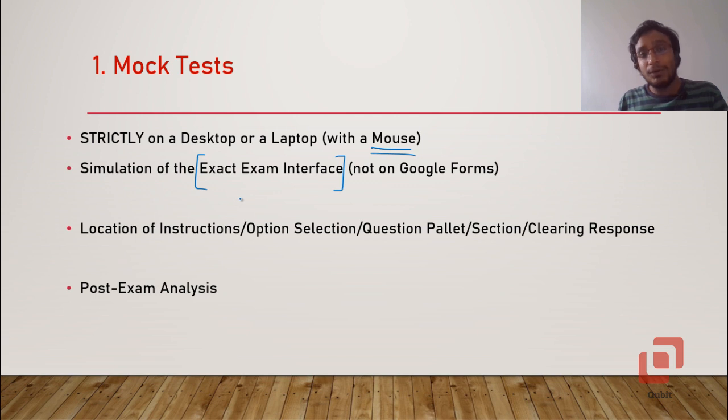Not only to get the feel of how the exam looks you should also exactly know what instructions are, where the location of those instructions is going to be, how to select the correct option, where is the question palette, what is the color scheme, what does red block mean and so on, green box mean and so on. How to clear the response or how to mark an MCQ for a review and so on. In the actual paper or in the actual test you will be having four sections. These four sections look like tabs in a browser for biology, chemistry, physics, mathematics. So you should exactly know where these things are so that you will not waste one or two seconds even in deciding where to look for those things.